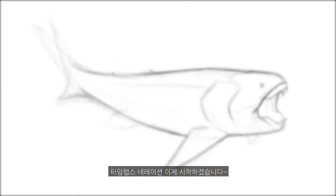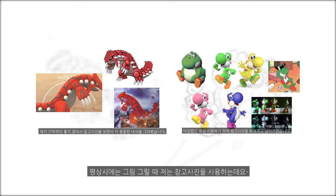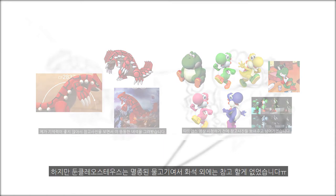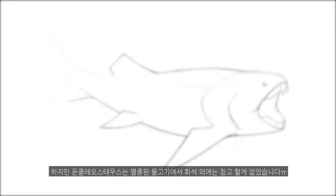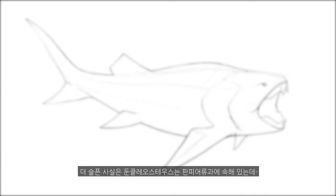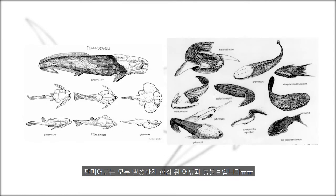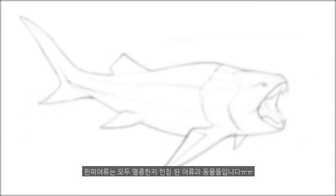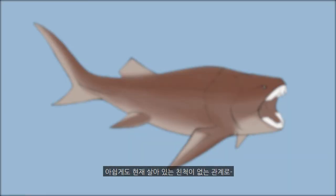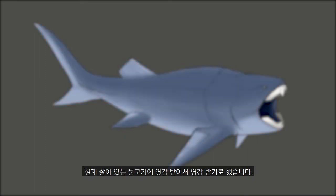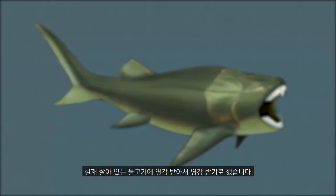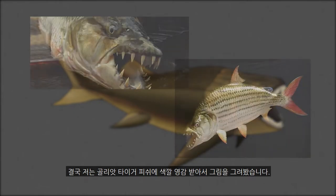Alright, narration portion of the timelapse video. Now normally when I draw something, I have reference photos that I take reference from for the drawing. However, in this case, Dunkleosteus is a fish that's extinct, so I really have no reference in real life. In fact, the very sad thing is that Dunkleosteus is from a group of fish called Placoderms, and these Placoderms are all extinct — none of them are alive today, which is kind of a shame. So since Placoderms and Dunkleosteus don't exist right now, I took reference from existing fish. In particular, I took reference from the Goliath Tigerfish. Here are two photos that I mainly took reference for.